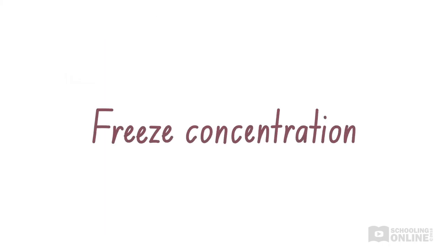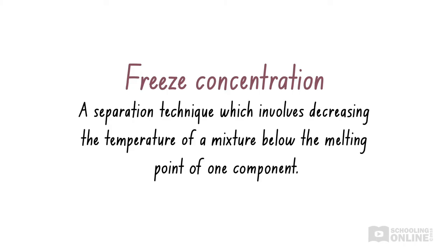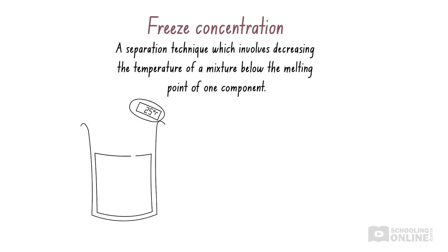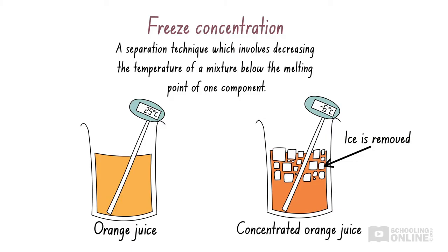Freeze concentration is a separation technique that depends on differences in melting points. It involves decreasing the temperature of a mixture below the melting point of only one component. The temperature of the mixture is reduced until one of the components freezes, while the other substances remain in a liquid state. The solid substance can then be removed by filtration. Freeze concentration is often used to increase the concentration of one miscible liquid in a mixture of miscible liquids. Completely miscible liquids can be mixed in any proportion to form a homogeneous mixture, such as ethanol and water.